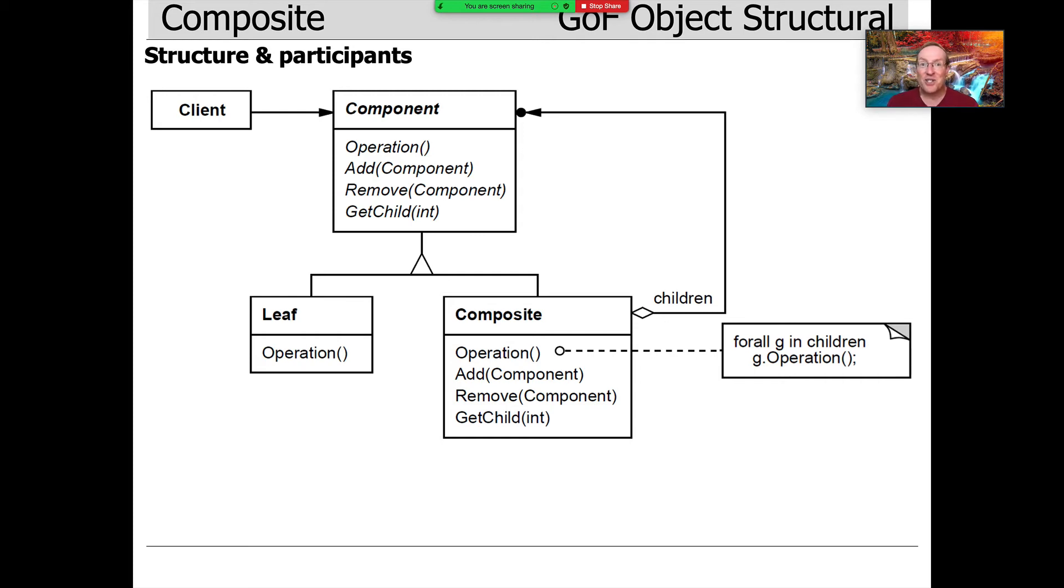the visual syntax in UML that shows leaf node is a child, is a subclass or derived class of component, as is composite.